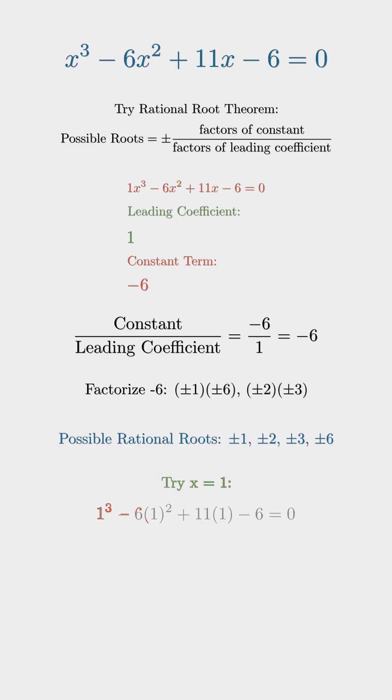Trying x = 1. Substituting gives 1 - 6 + 11 - 6, which equals 0. Since x = 1 makes the equation 0, it means x = 1 is a root of the cubic. So we can factor out (x - 1) from the entire expression.